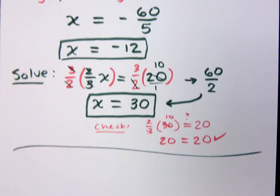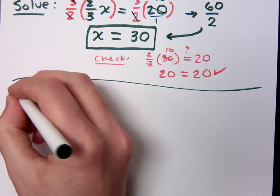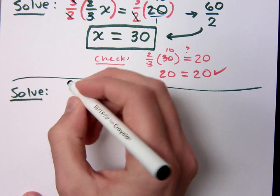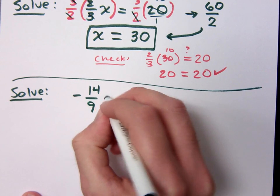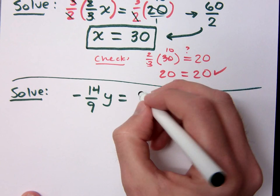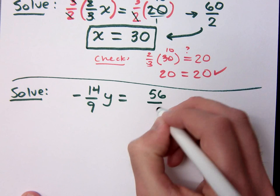All right, let's try one more where we have to worry about a coefficient that is a fraction. Let's see what you guys can do on this one. So if I have negative 14 ninths y equals 56 over 81.